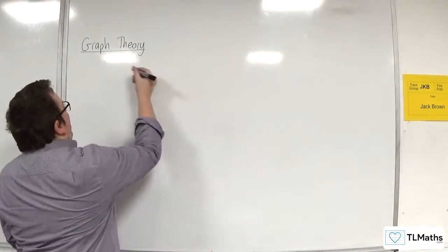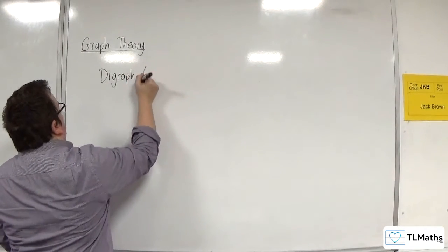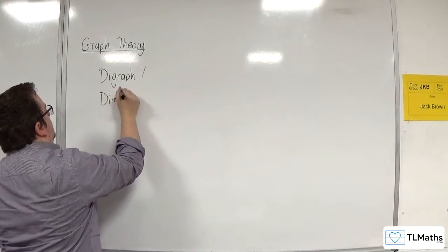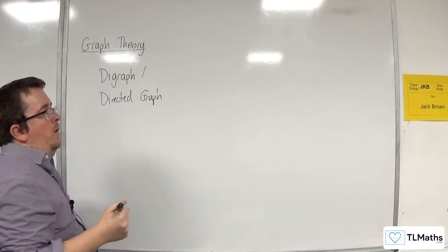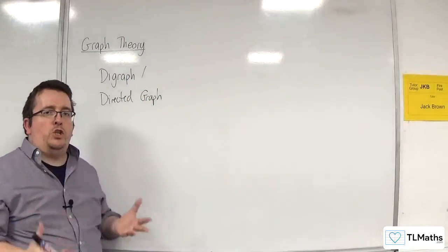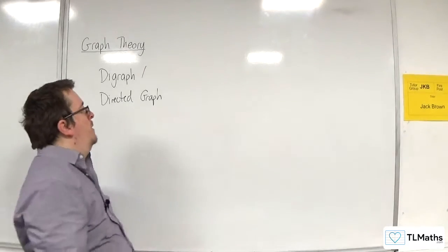A digraph, or directed graph, is one where there is some direction of flow through your graph, or through a network.